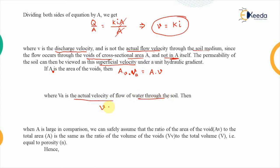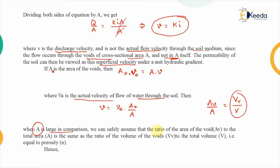If we consider the area of voids to be A_V, then A_V times the actual velocity V_A equals the total area A times the superficial velocity V. Therefore V = V_A × (A_V / A). When the medium area is large compared to the void area, we can assume A_V/A equals the ratio of void volume to total volume, which is the porosity. Therefore the discharge velocity V equals the actual velocity V_A times the porosity, meaning the discharge velocity is less than the actual velocity.